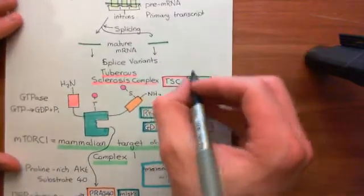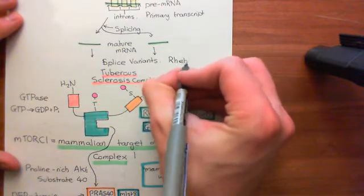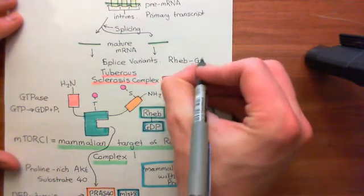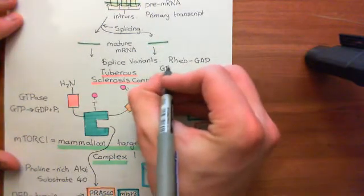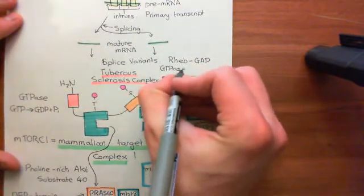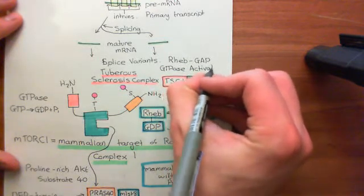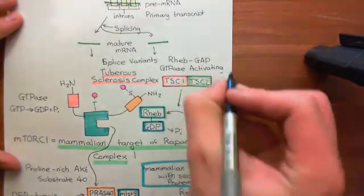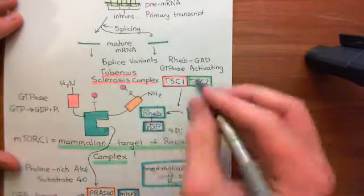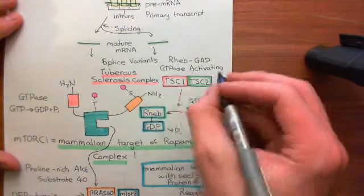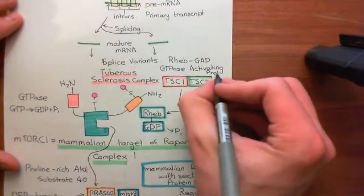The tuberous sclerosis complex is therefore what's known as a RHEB GAP. GAP stands for GTPase Activating Protein. We've seen GEFs — guanine nucleotide exchange factors — and we saw that SOS was a RAS GEF. We're now seeing the tuberous sclerosis complex, which is a RHEB GAP, doing the opposite: it activates monomeric G proteins to turn themselves off, specifically the RHEB monomeric G protein.